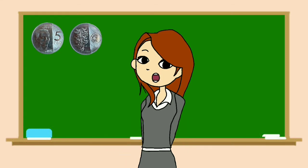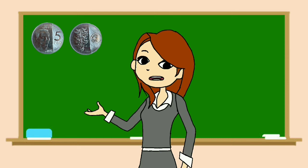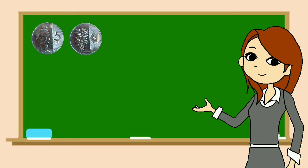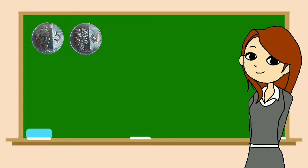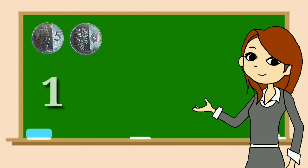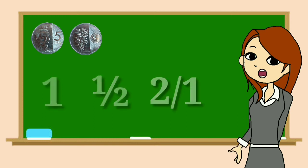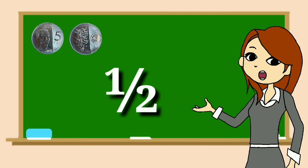Now let us find the probability of getting a head. There are two possible outcomes: head and tail. How many heads can you see on this coin? Correct, there is only one head. Given the formula, what is the probability of getting a head? Is it one, one half, or two over one? Correct — one half! Therefore, the probability of getting a head is one half.